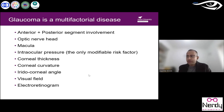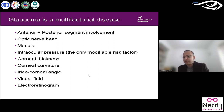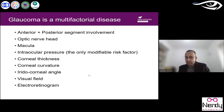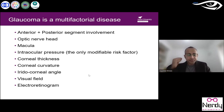Glaucoma is a multifactorial disease, affected by several factors, and it involves both the anterior and posterior segment of the eye — especially the optic nerve head and macula. Intraocular pressure is the only modifiable risk factor, meaning the way to prevent glaucoma is to reduce intraocular pressure. Corneal thickness, curvature, and the iridocorneal angle all affect glaucoma. Visual field and electroretinogram are also important.